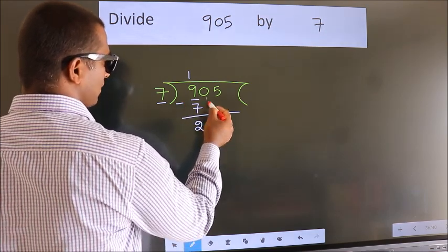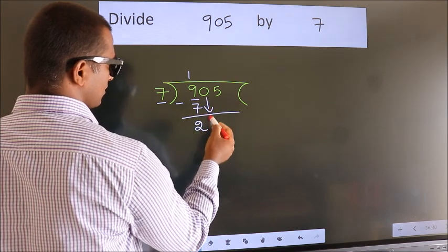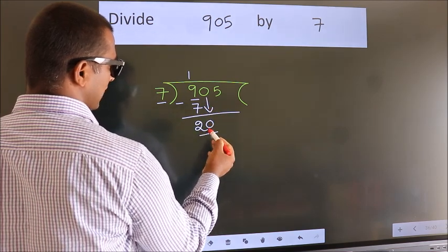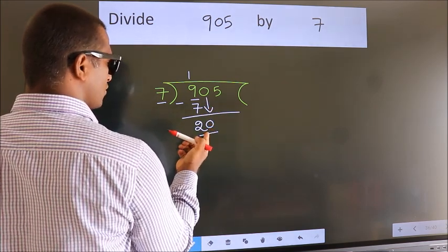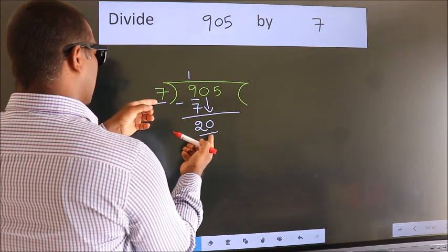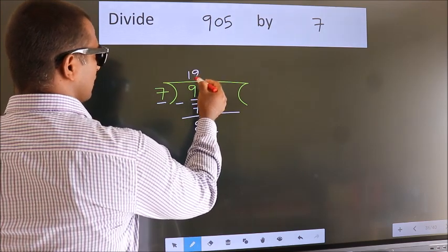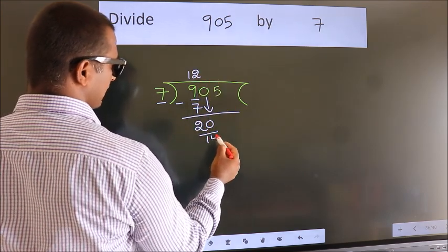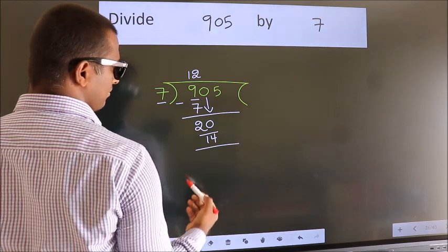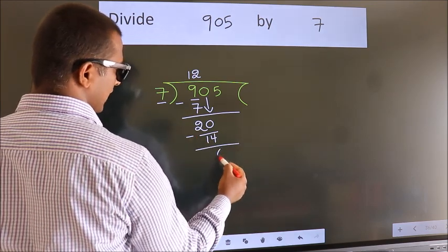After this, bring down the beside number. So, 0 down. So, 20. A number close to 20 in 7 table is 7, 2s, 14. Now, we subtract. We get 6.